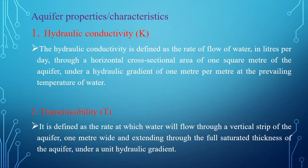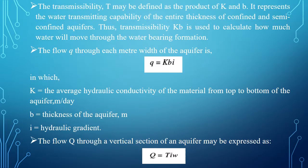The second important property of aquifer is transmissibility. Transmissibility is defined as the rate at which water will flow through a vertical strip of the aquifer 1 meter wide and extending through the full saturated thickness of the aquifer under a unit hydraulic gradient. Transmissibility may be defined as the product of K and B, where K is the hydraulic conductivity and B is the thickness of the aquifer.